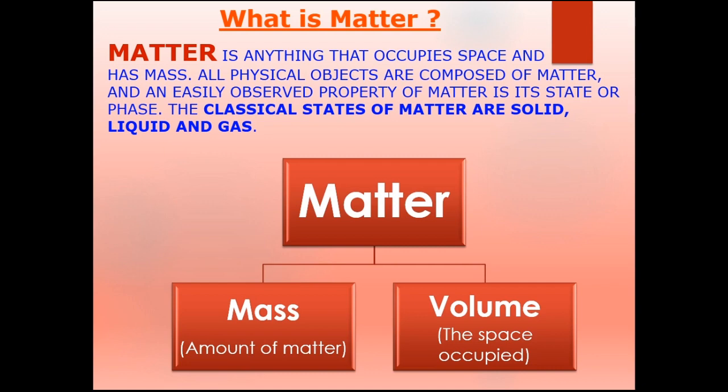Matter basically exists in three classical states which are very commonly seen: matter can exist either as a solid, liquid, or a gas. There are two other rarely seen states of matter — plasma and BEC, that is Bose-Einstein condensate. Plasma and BEC require rare conditions, so we are not going to discuss them presently. In the higher classes, we will discuss plasma and BEC also.